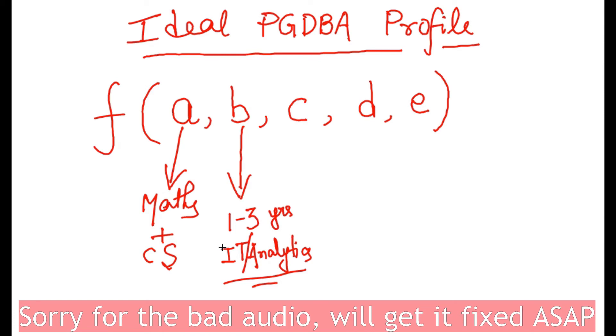The third variable 'c' denotes written test performance. Obviously, this is not directly dependent on your profile, but if you're someone who has prepared well, who is good in mathematics and problem-solving, your written test score will be high and you'll have a better chance of getting into PGDBA.